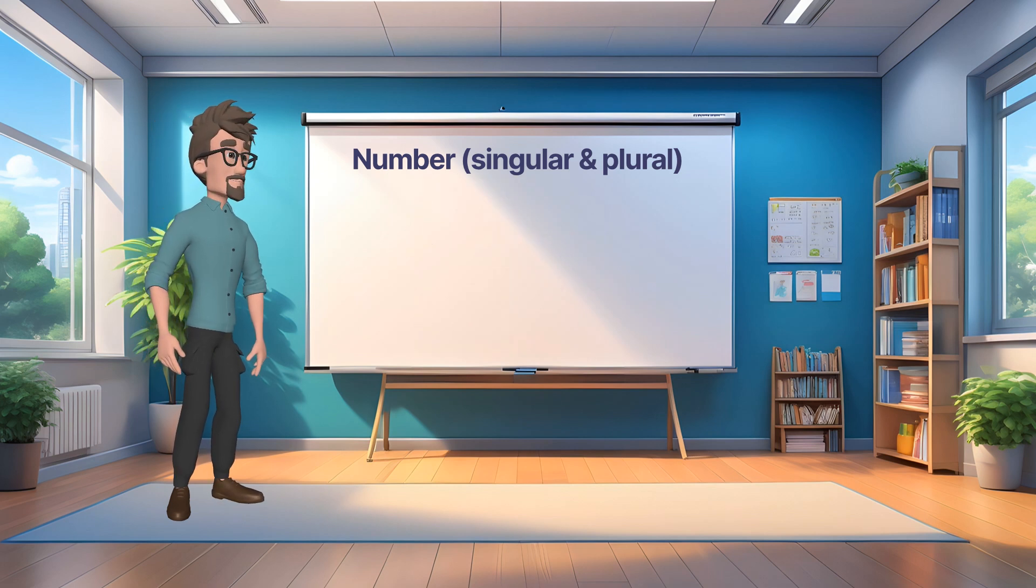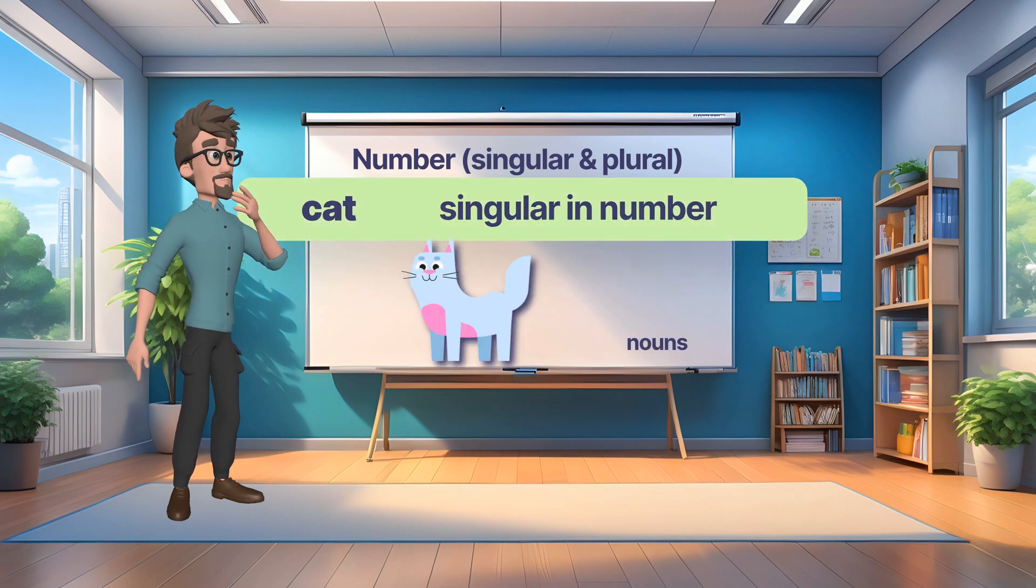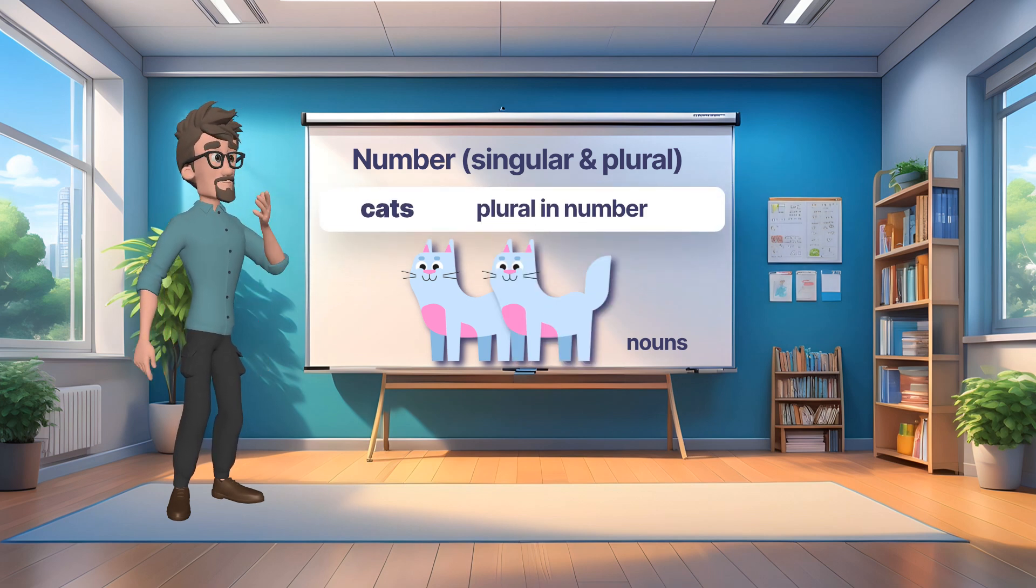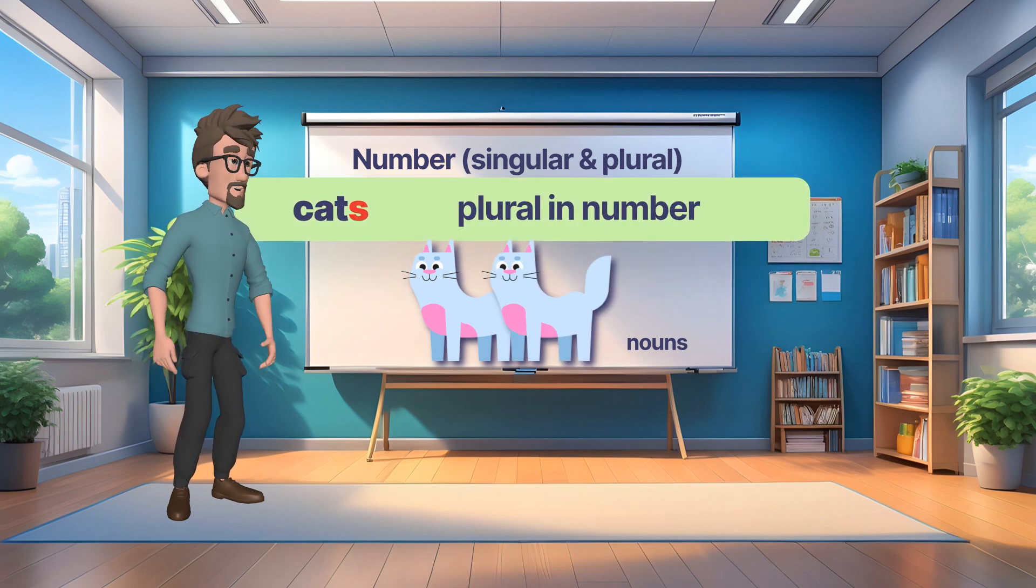Now let's have a look. Cat, which is singular number. There is one cat. Cats, which is plural number. There are two cats.